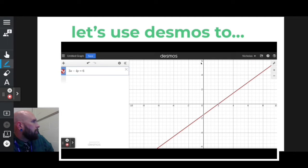The y-intercept is where my line crosses the y-axis, and that happens at 0, negative 1.5.